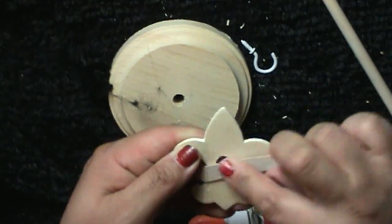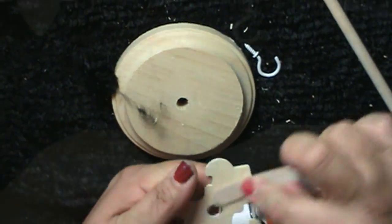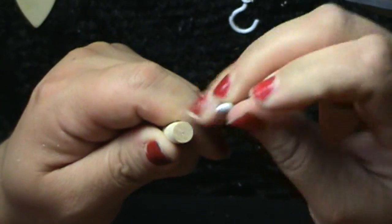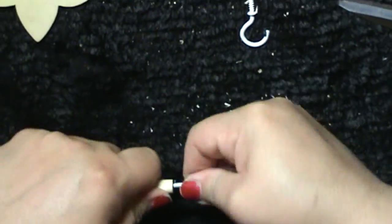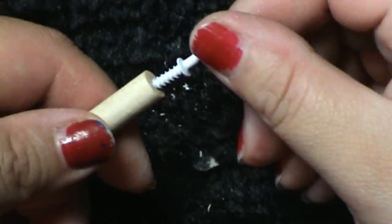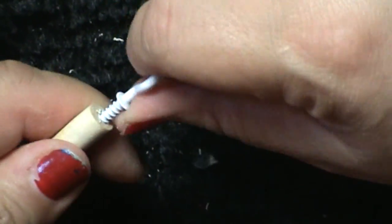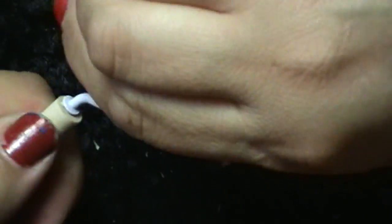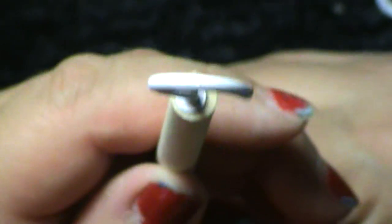Once you have it all sanded down, now we go to the handle part. What you do is you need a little window hook, and I love this because you don't need that much force. You don't need to do any kind of drilling. All you have to do is screw it on like you see and it should look something like this.